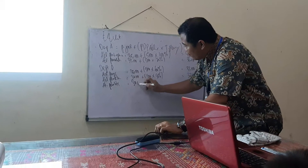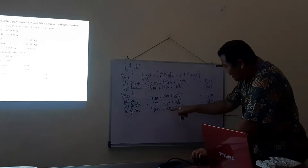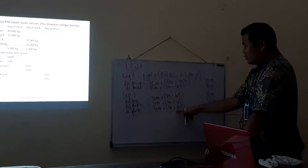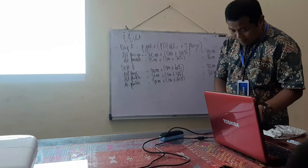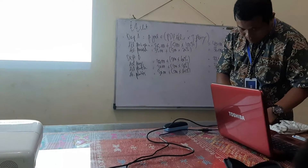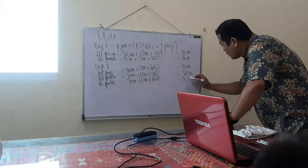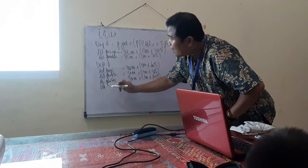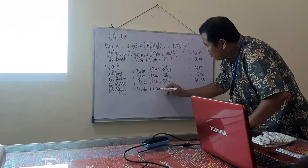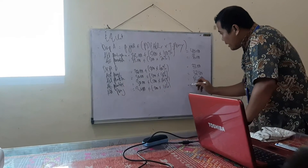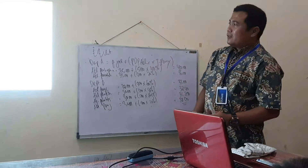Aktivitas Pembungkusan = 30.000 ditambah 5.000 dikali 25% = 31.250. Aktivitas Penjualan = 30.000 ditambah 5.000 dikali 10% = 30.500. Itulah equivalent unit untuk Departemen A dan Departemen B. Sekarang kita hitung biaya per unitnya.